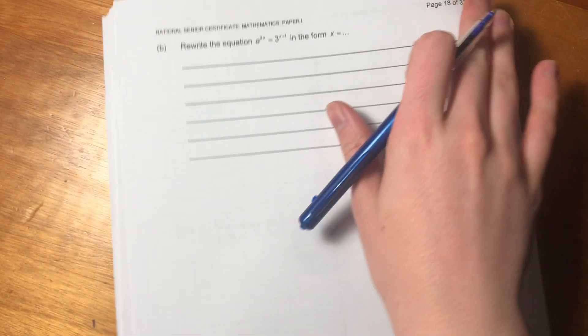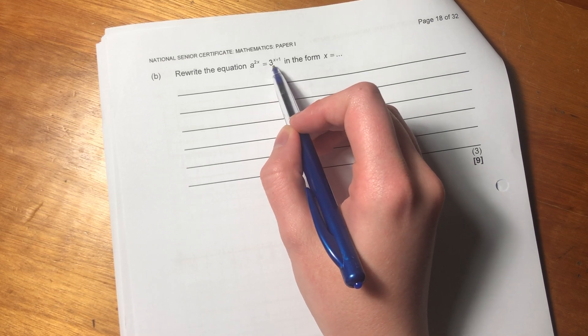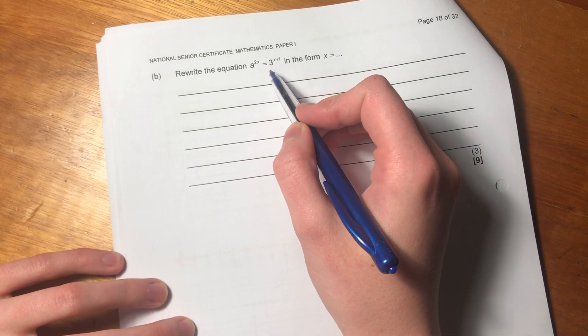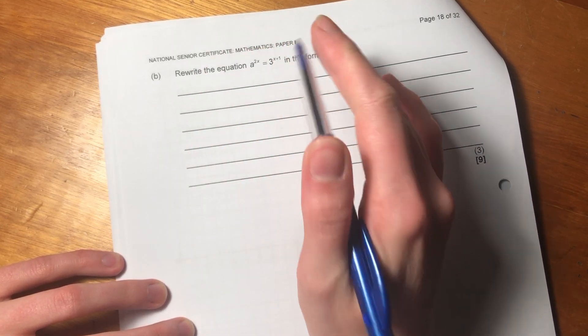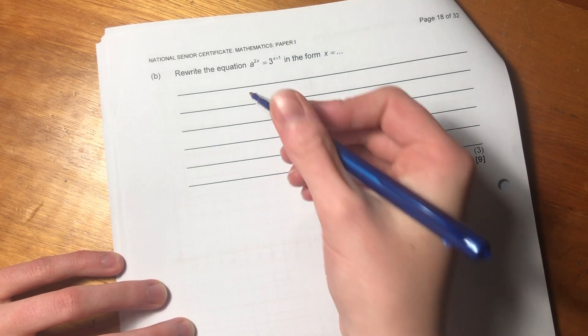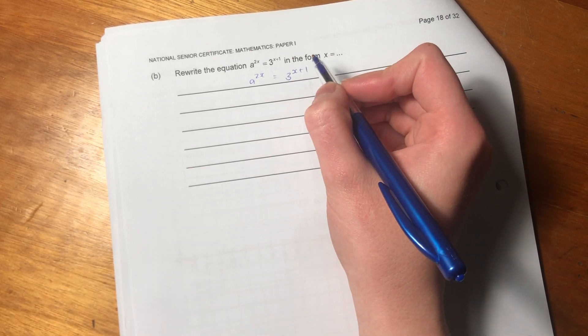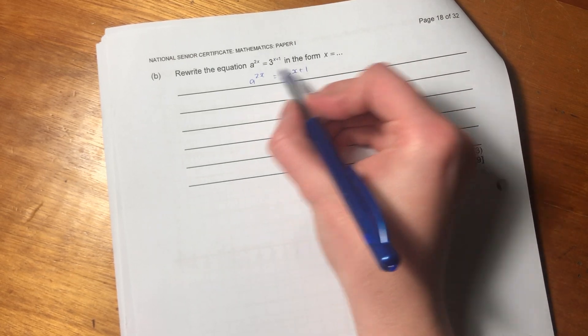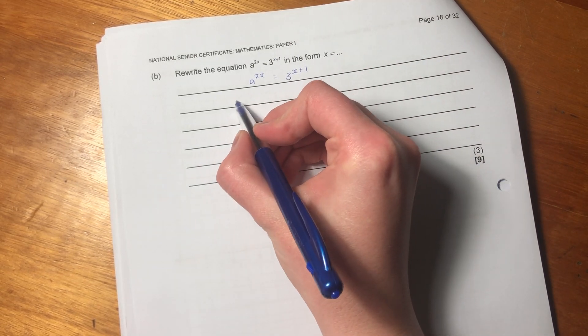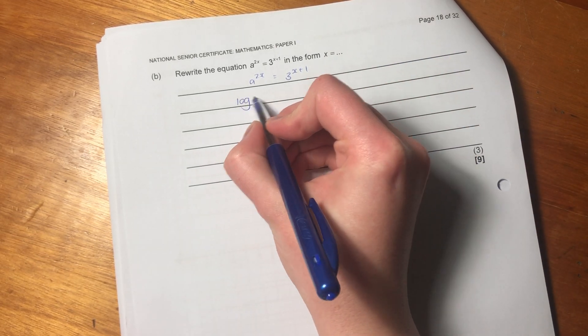Let's now go to the last question of this question. So it says rewrite the equation a to the power of 2x equals 3 to the power of x plus 1. Now, what's important here is that we don't have bases that are the same. So we can't just drop them and make it equal to each other. We're going to have to look at log. Now, you might be saying, jeepers, this guy log just like appears everywhere. And you wouldn't be wrong because he does. He comes in quite a lot. And if you don't understand your log rules, you have to go revise them. So I'm going to log both sides.